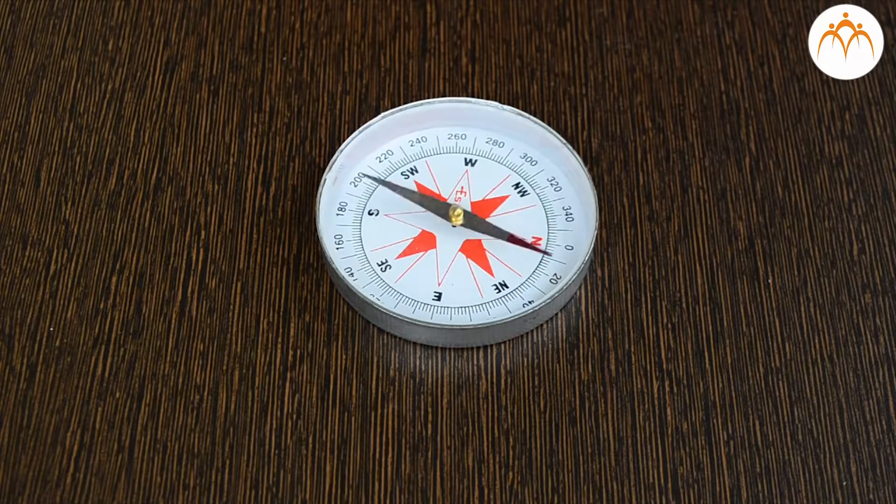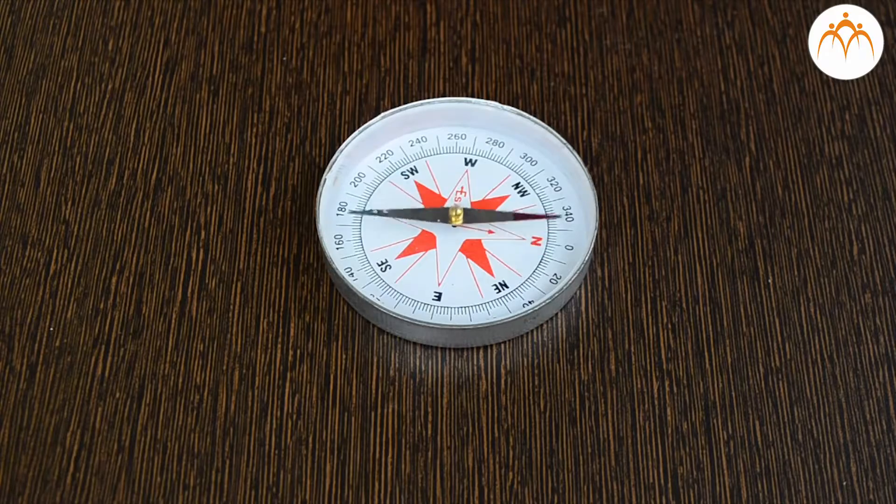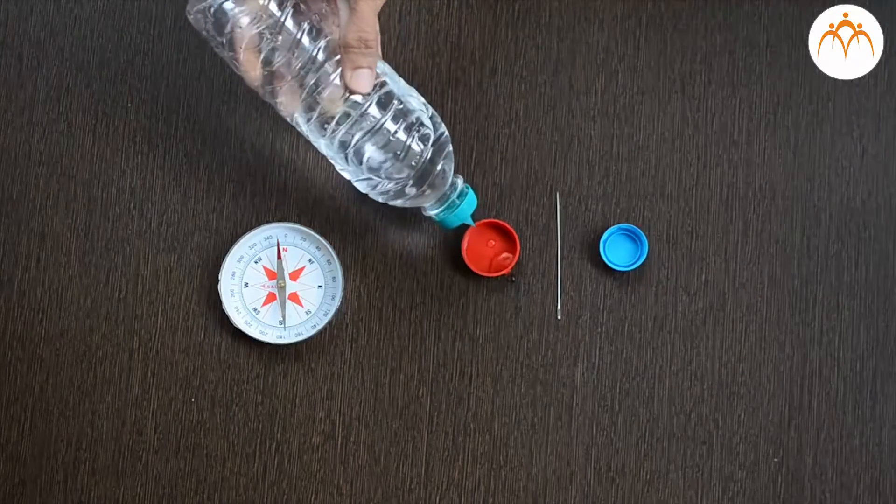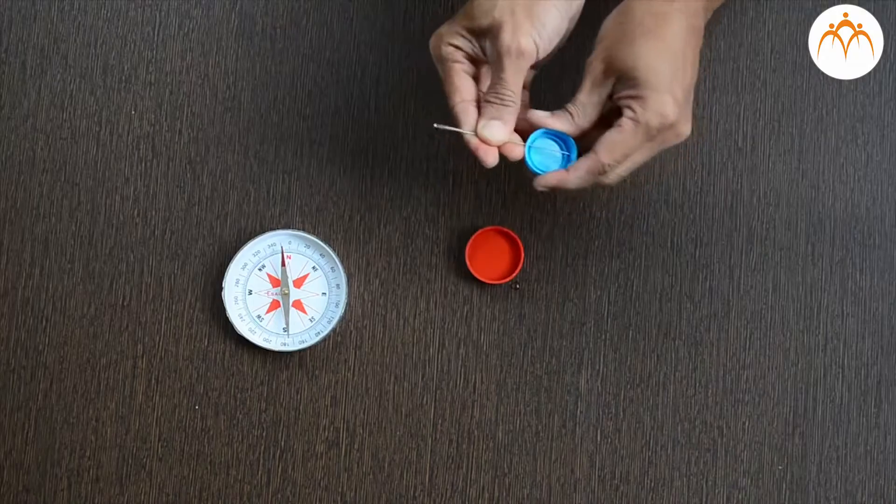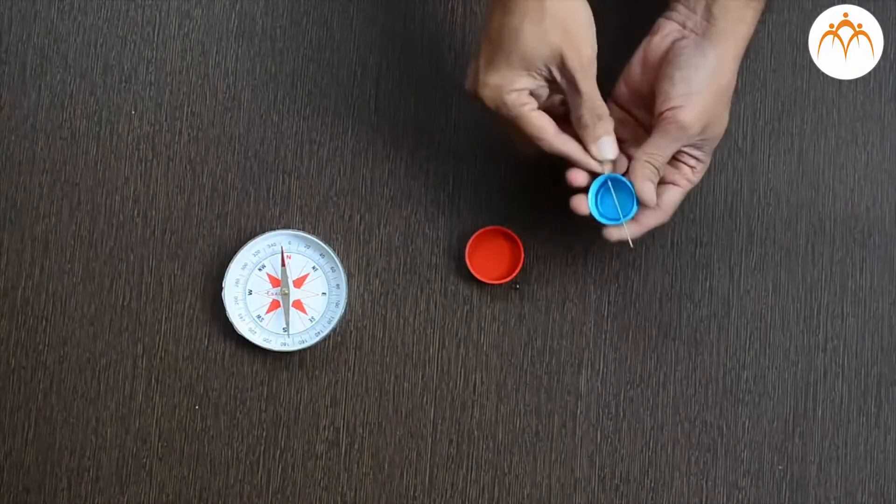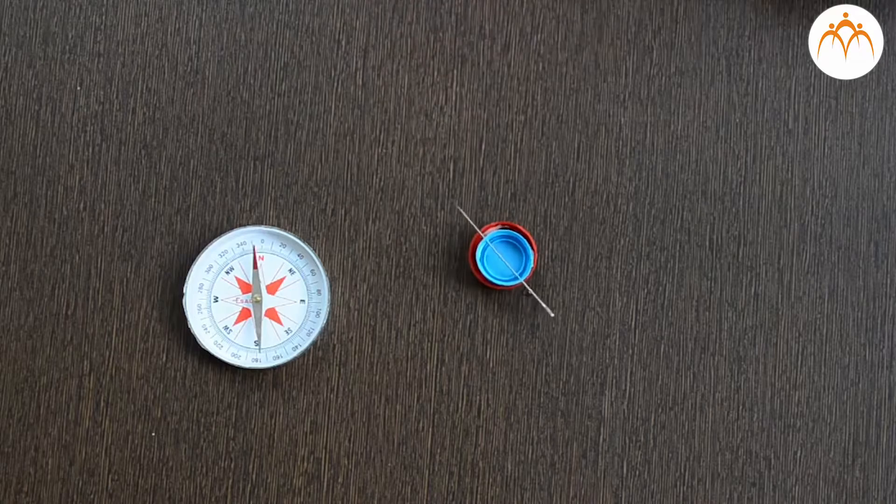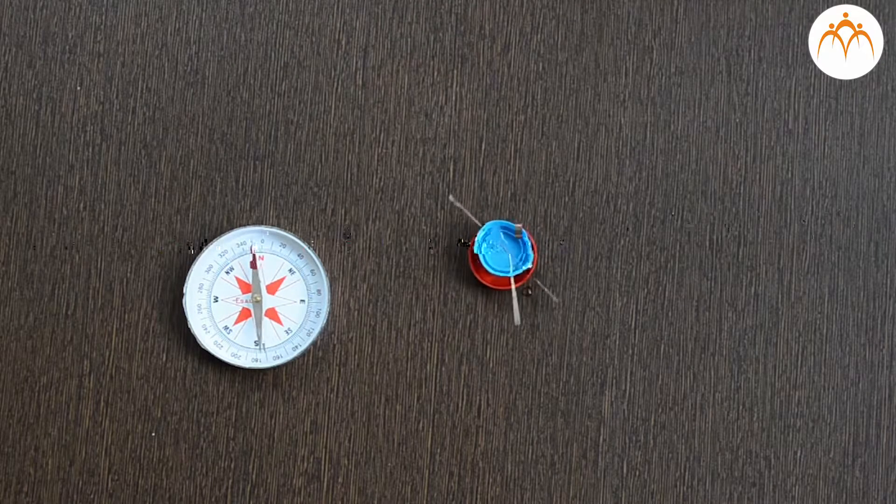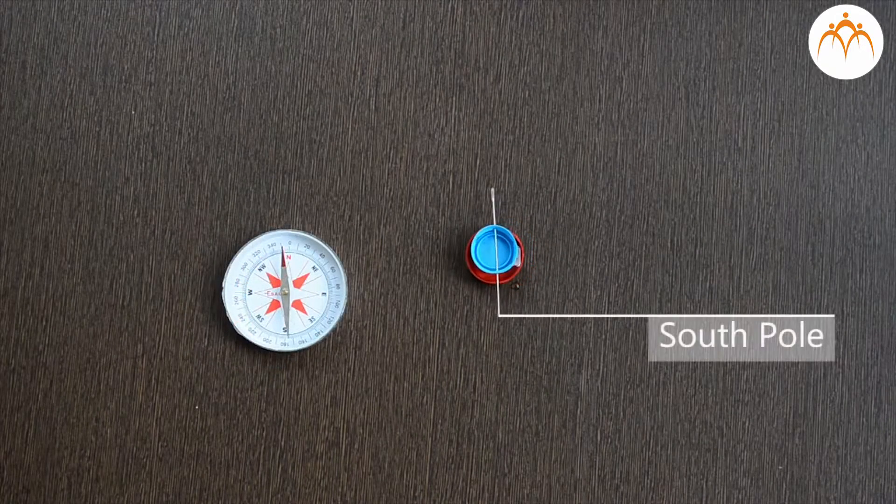You must have seen a magnetic compass like this available in the market. It is used for finding directions. We can make a similar compass using the needle we just magnetized. Take a water bottle cap and insert the needle in it. Place this cap on water in a plastic container.